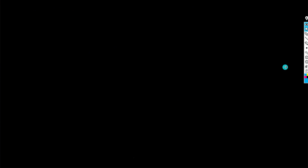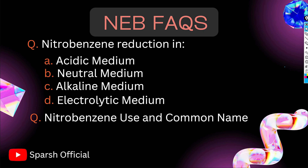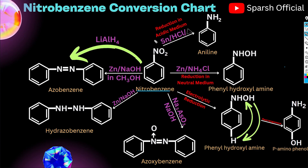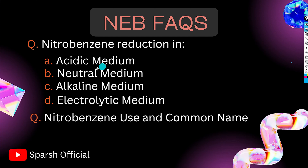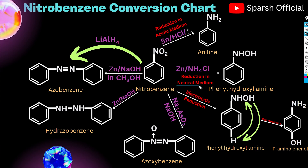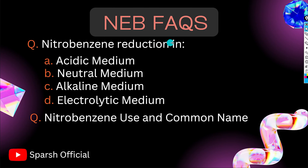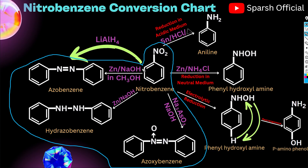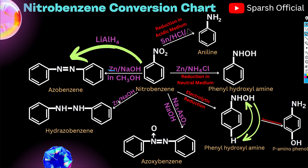Moving on to the next slide. Nitrobenzene reduction in acidic medium with Sn/HCl gives aniline as the acid product. Nitrobenzene reduction in neutral medium gives phenyl hydroxylamine. Reduction in alkaline medium gives hydrazobenzene, azoxybenzene, and azobenzene depending on the conditions.